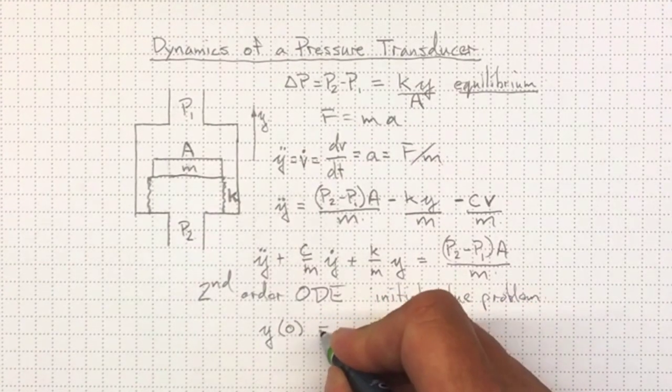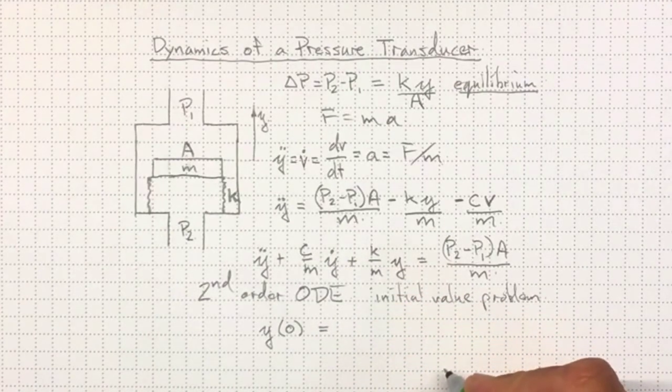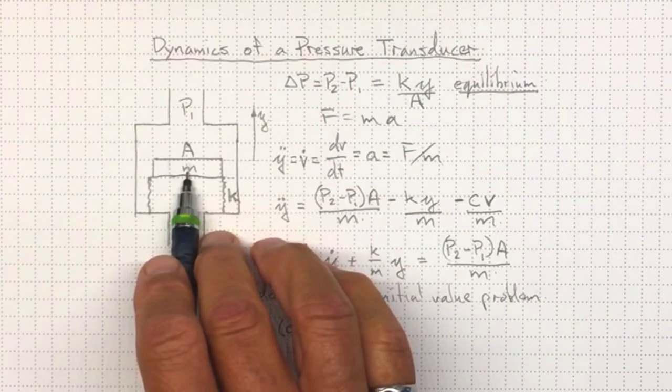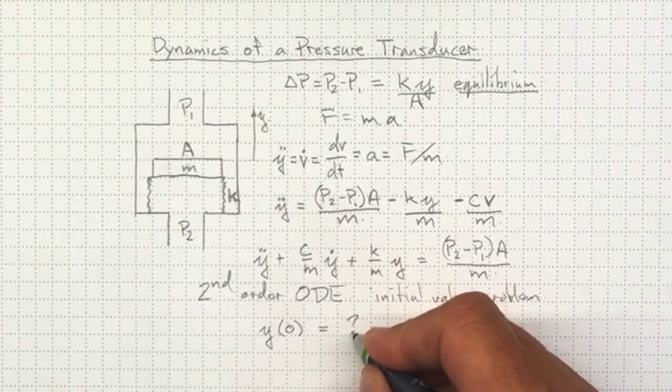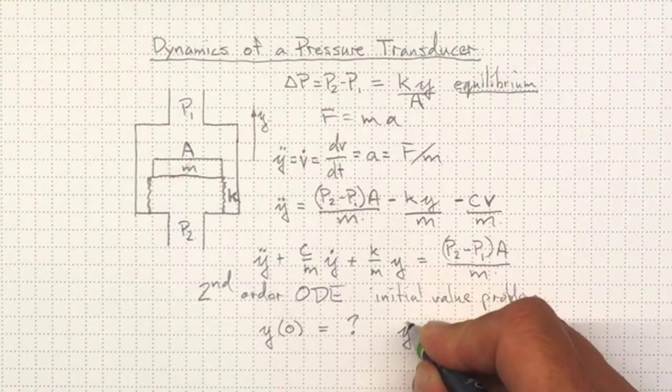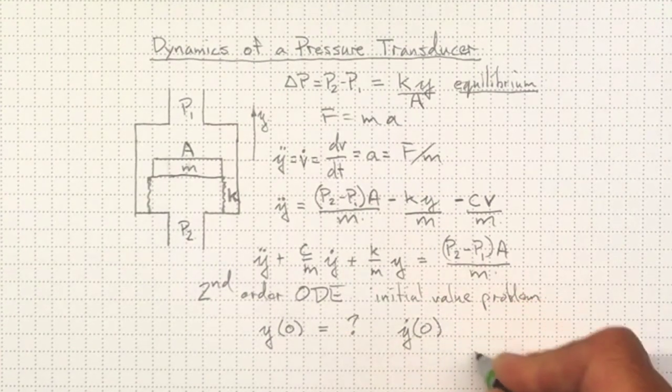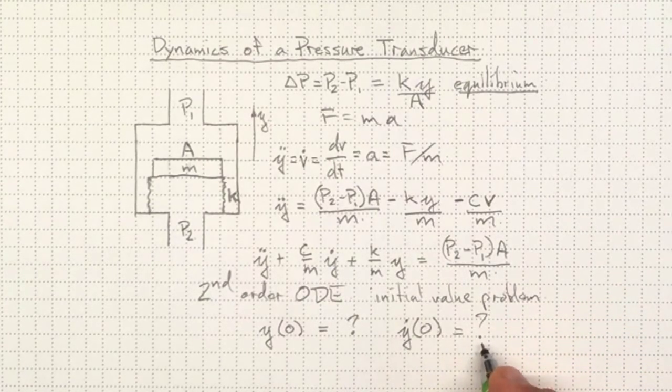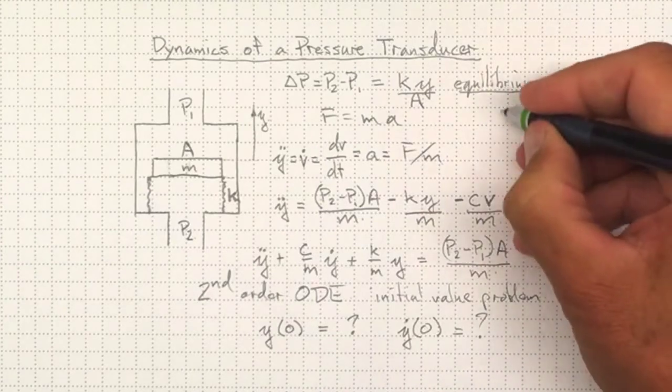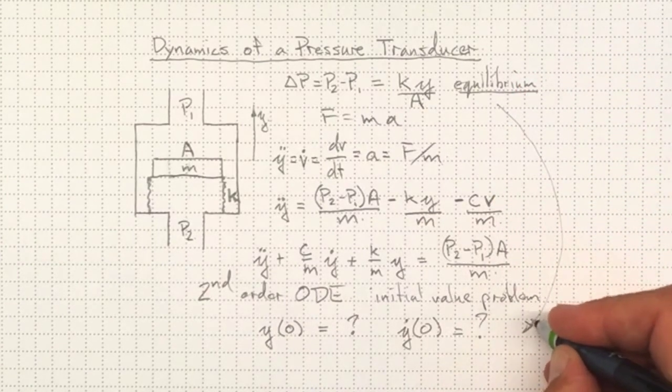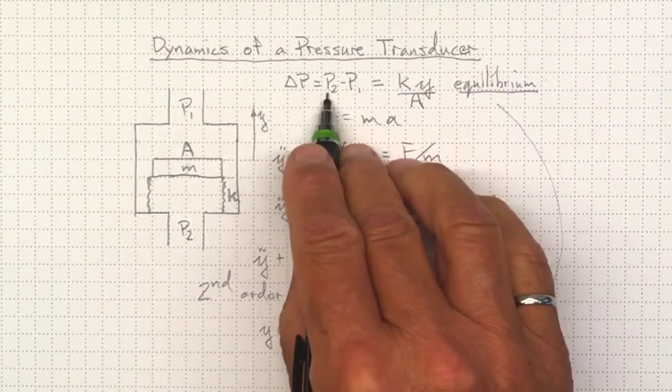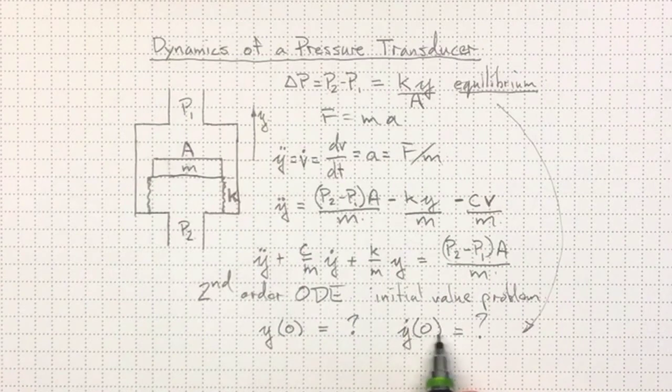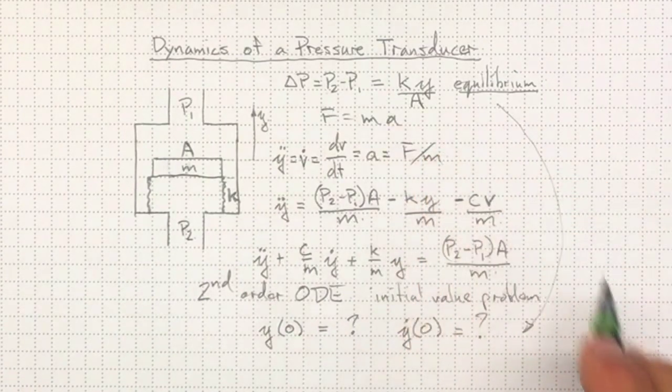So where is the pressure transducer's diaphragm initially? And we'll also have to be able to specify what the velocity at time zero is for the pressure transducer's diaphragm. And the easiest way to get to those, well we can take that from our equilibrium. The position will be whatever puts it in equilibrium with the pressure that was previously applied, and the velocity will be zero because it's in equilibrium.